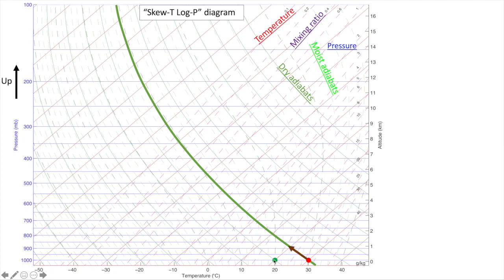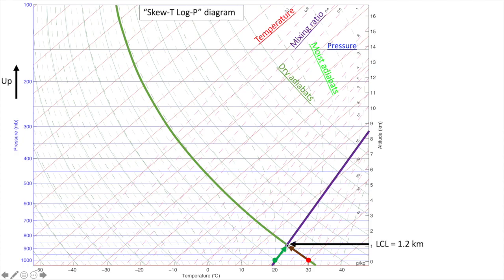As the parcel is lifted, it will not remain subsaturated indefinitely. The dew point temperature also cools slightly as the parcel is lifted due to decreases in pressure, cooling at a rate that conserves the water vapor mixing ratio — since we are not adding or subtracting water from this hypothetical parcel, the dew point follows the line of constant water vapor mixing ratio. Once the parcel's dew point equals its temperature, the relative humidity reaches 100%. We call this point the lifting condensation level, or LCL — this is where we would expect the base of a cloud to form, in this case at 1.2 kilometers elevation.